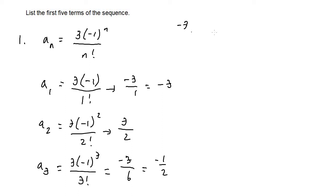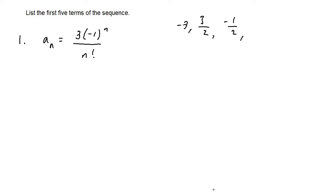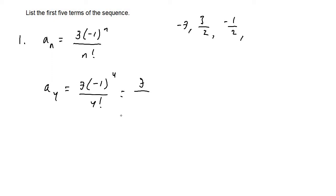So a_sub_1 is negative 3, a_sub_2 is 3 halves, and a_sub_3 is negative one half. Now for a_sub_4, we plug in 4: 3 times negative one to the fourth over 4 factorial. Negative one to the fourth is 1, so we have 3 over 24, which simplifies to one over 8. That is the fourth term of the sequence.